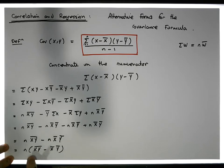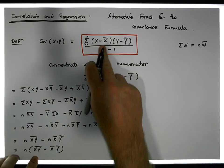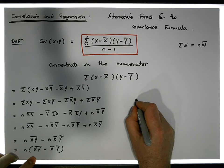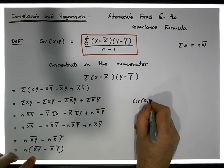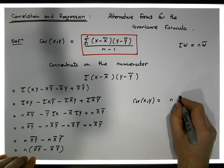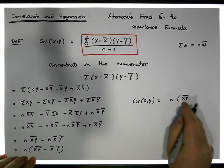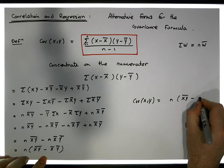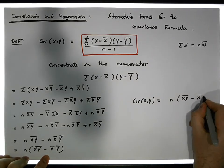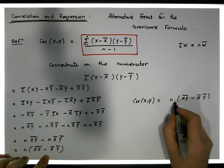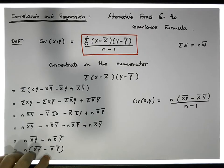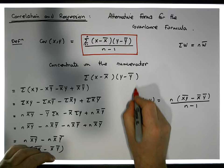We've converted the numerator into a different form. The covariance of x and y can actually be written as n times the cross product of the x's with the y's, which is x̄ȳ bar, minus the average of the x's times the average of the y's — all divided by n minus one.